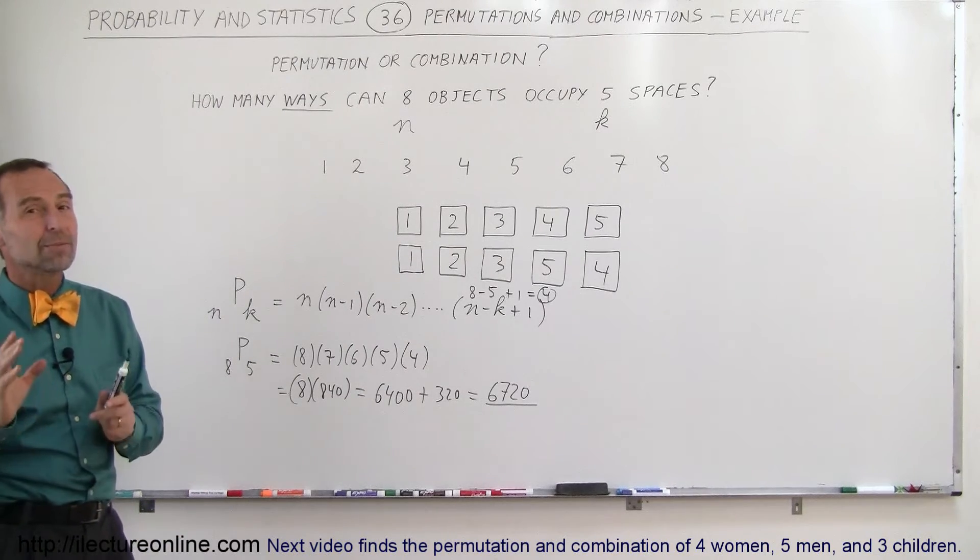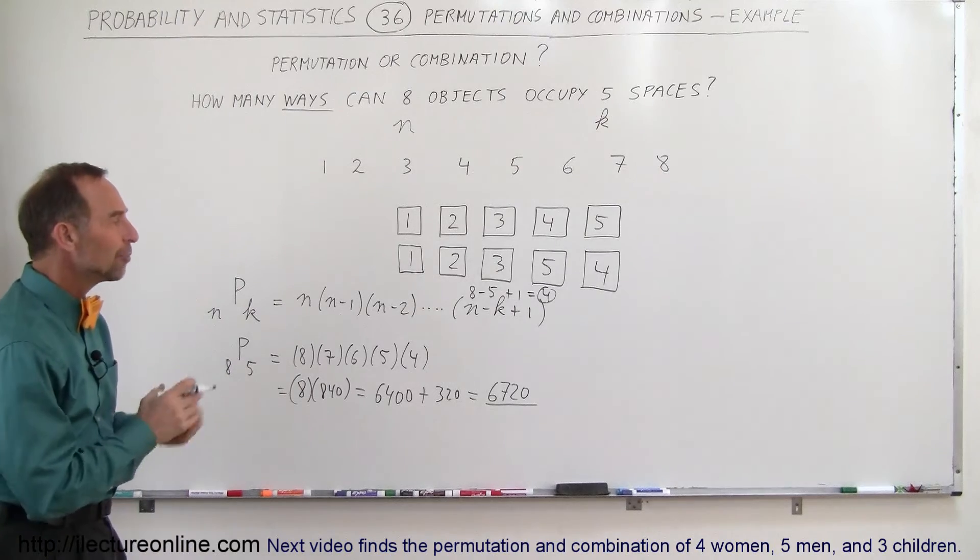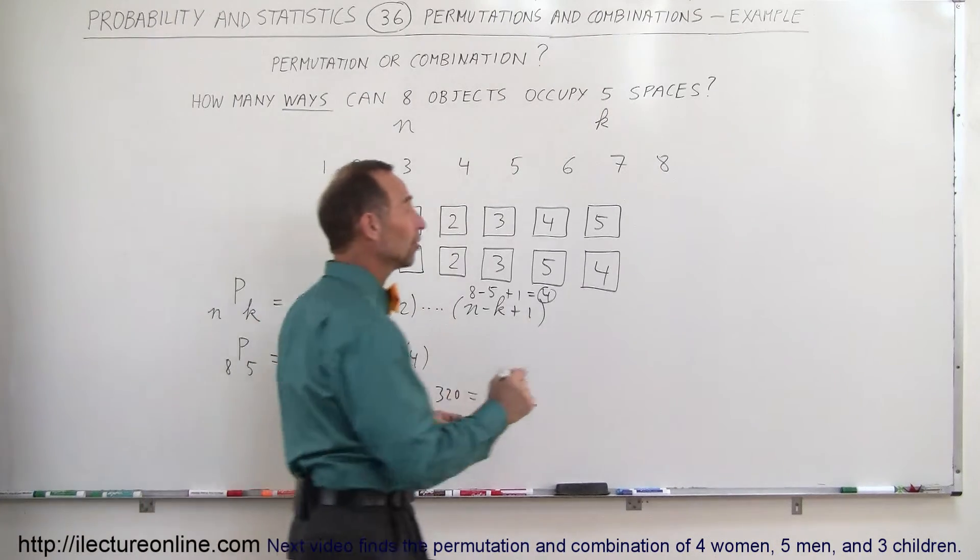If it were to come to combinations, the number would be much, much smaller. Matter of fact, why don't we do that? What would it be if we just wanted to know the number of combinations? Well, there the equation is as follows.